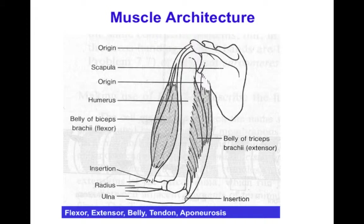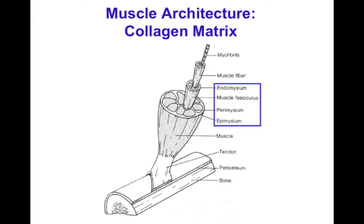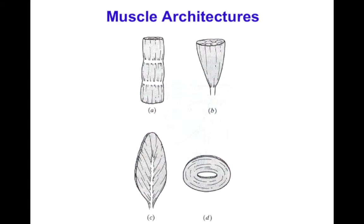Most muscles don't have fibers running parallel to the tendon axis. The collagen organizing cells into fascicles is called the perimysium; the collagen inside bundles connecting individual cells is called the endomysium; and the outer collagenous layer is called the epimysium. The architecture of the muscle combines the orientation of myocytes into fascicles and how those fascicles are organized macroscopically to terminate on tendons. The parallel fiber organization is intuitive, but many muscles — even the biceps — are actually more tapered.